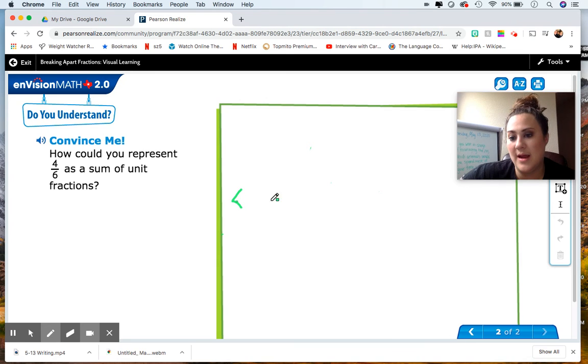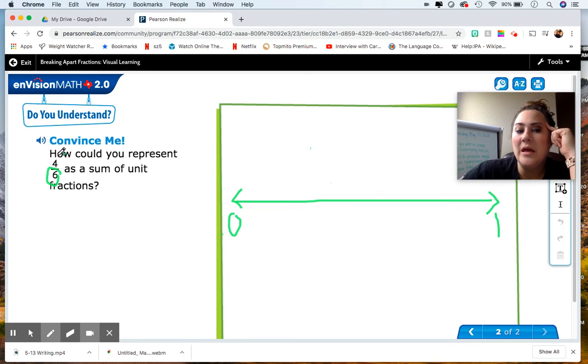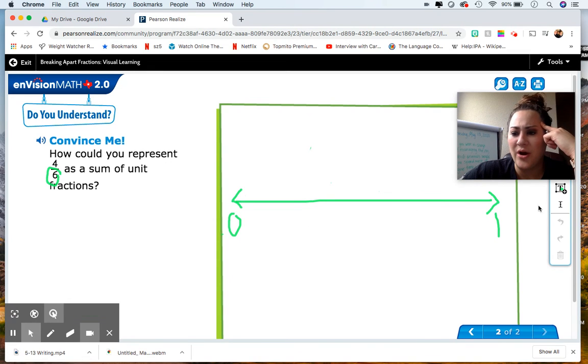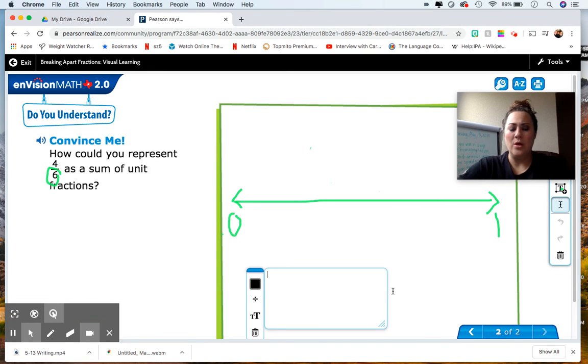A number line. You can either do a number line or you could do the strips. With the number line, remember you need zero and one. Based off of that denominator, how many equal parts is our number line going to be divided into? Six. You then are going to show where four-sixths is. But what fractions are you going to add together to show four-sixths? That is what I really want to see from you to make sure that you understand it.